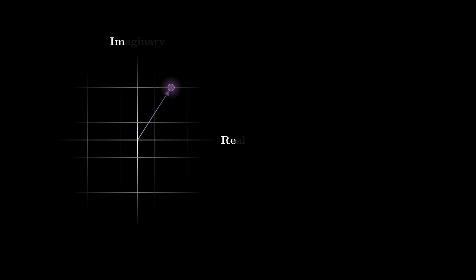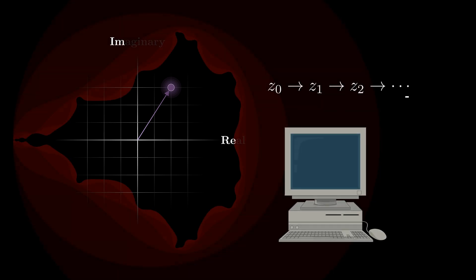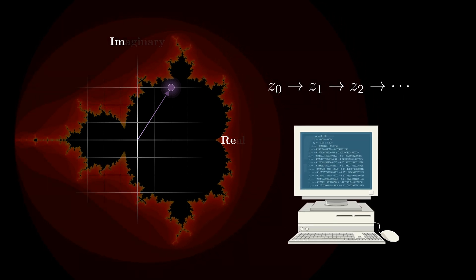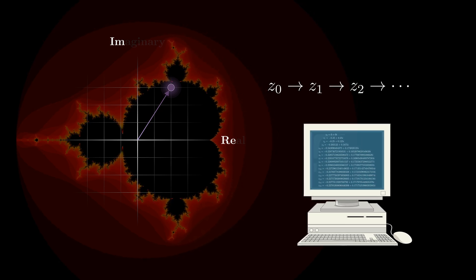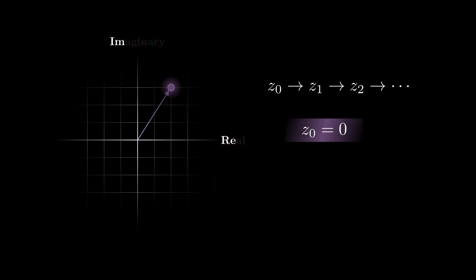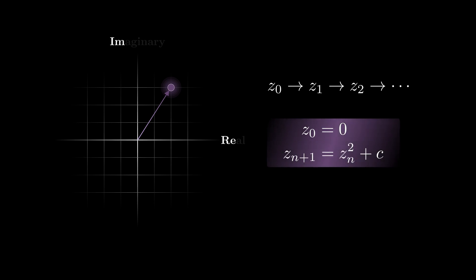The Mandelbrot set is computed through the generation of a specific sequence of complex numbers. The sequence always starts with Z₀ equal to 0. The other numbers in the sequence are then generated by the recursive formula: Z_{n+1} = Z_n² + C. The complex number C can be chosen arbitrarily, and it controls the behavior of the sequence. Note that Z₀ = 0 immediately implies that Z₁ is always equal to C.